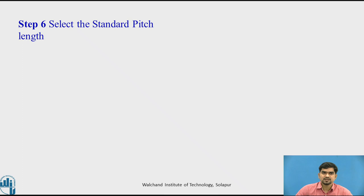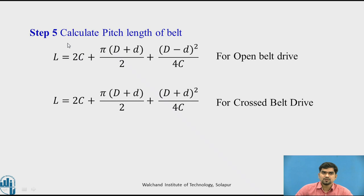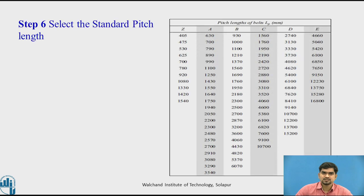Step 6: Select the standard pitch length Lp. Using the equation we calculate the pitch length, and if the result is, say, 2400, we must round up and select the nearest standard pitch length of 2500 from the manufacturing data book. We select the next higher standard value available.